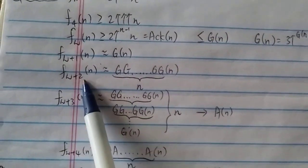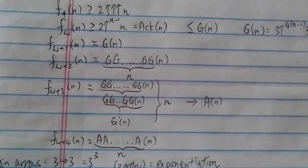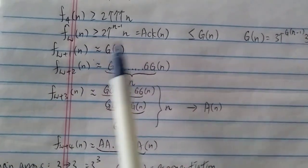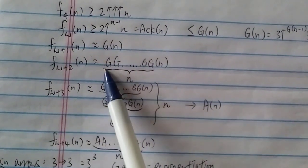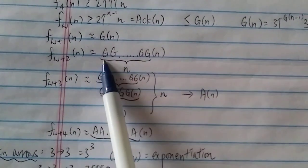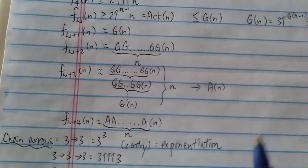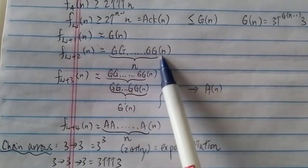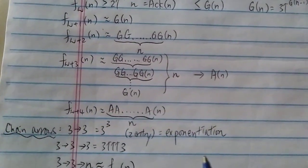What about f(ω+2)? It's not that difficult to understand - using Graham's function as an example, ω+2 means you just start iterating the g function. So it looks like g(g(g(...g(n)...))) with n number of g's applied to n. That would be around the growth rate of f(ω+2).